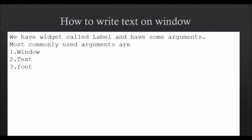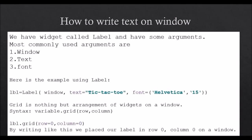To write text on a window, we have a widget called Label with some arguments. The most commonly used arguments are window, text, and font. Here is a basic example using Label: variable name equals Label, passing three arguments — window, text equals 'tic-tac-toe', and font has two arguments: font family and font size. Grid is our arrangement of widgets on a window; syntax is variable.grid(row, column), arranging the widget in a matrix format on the window.